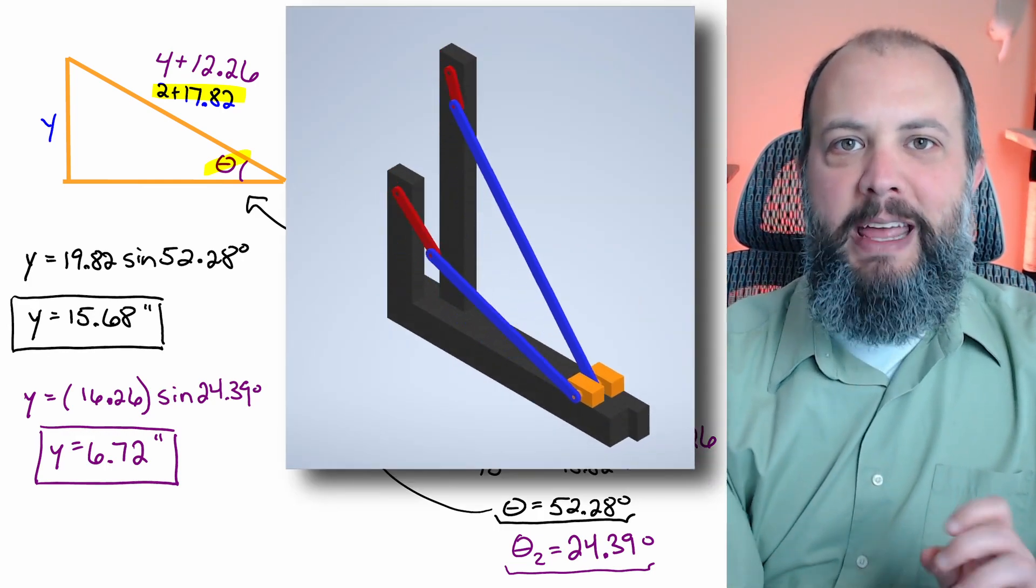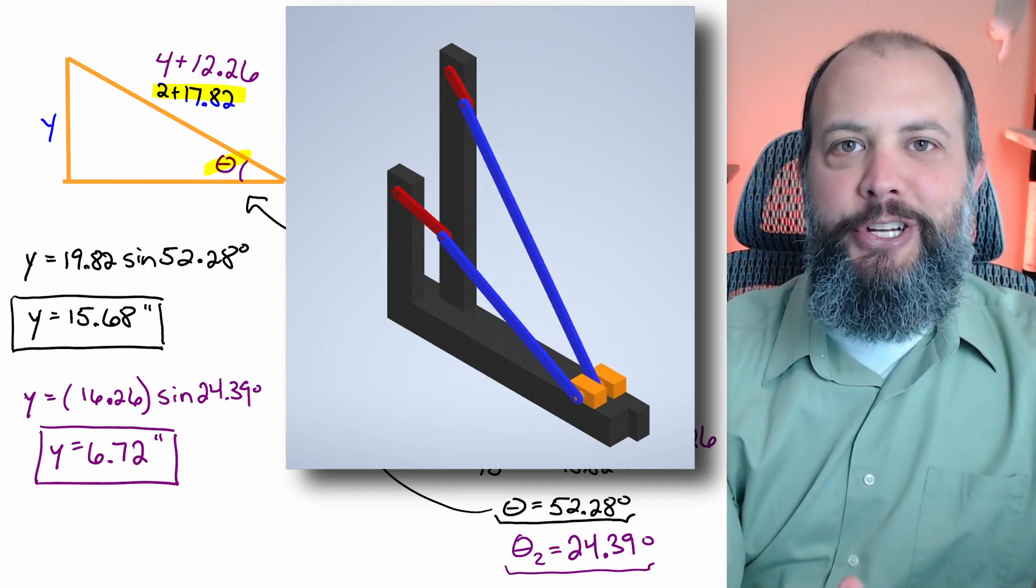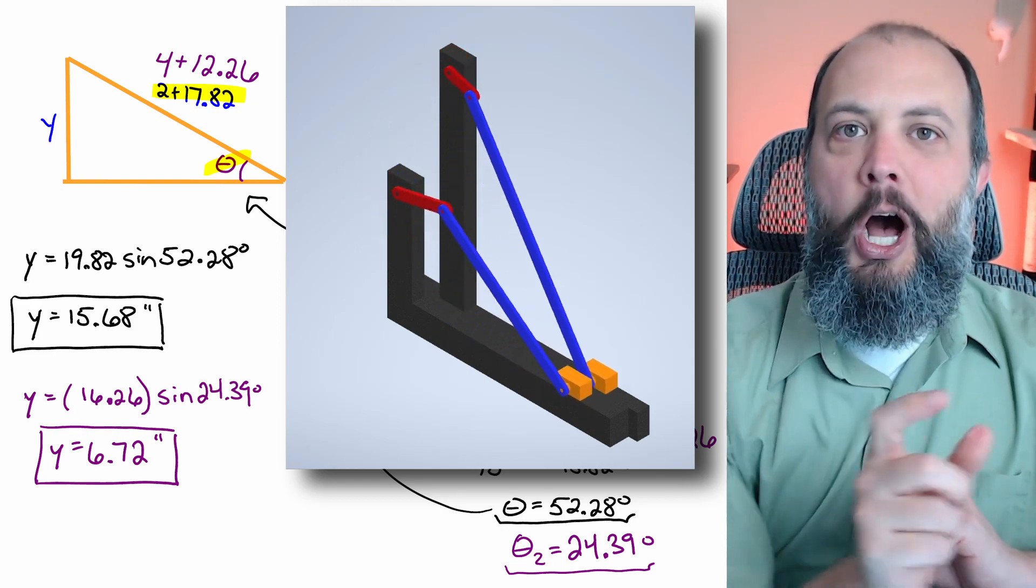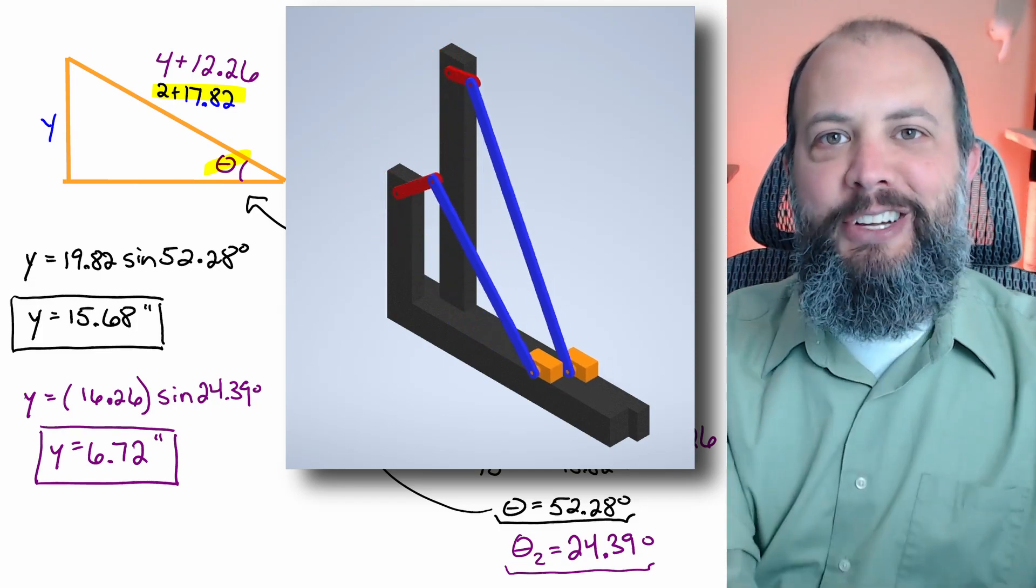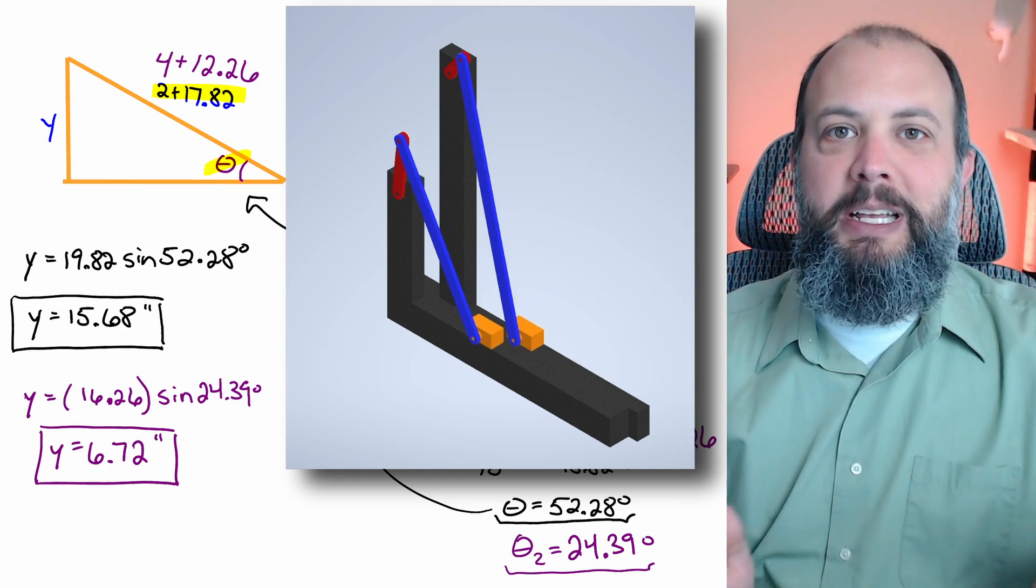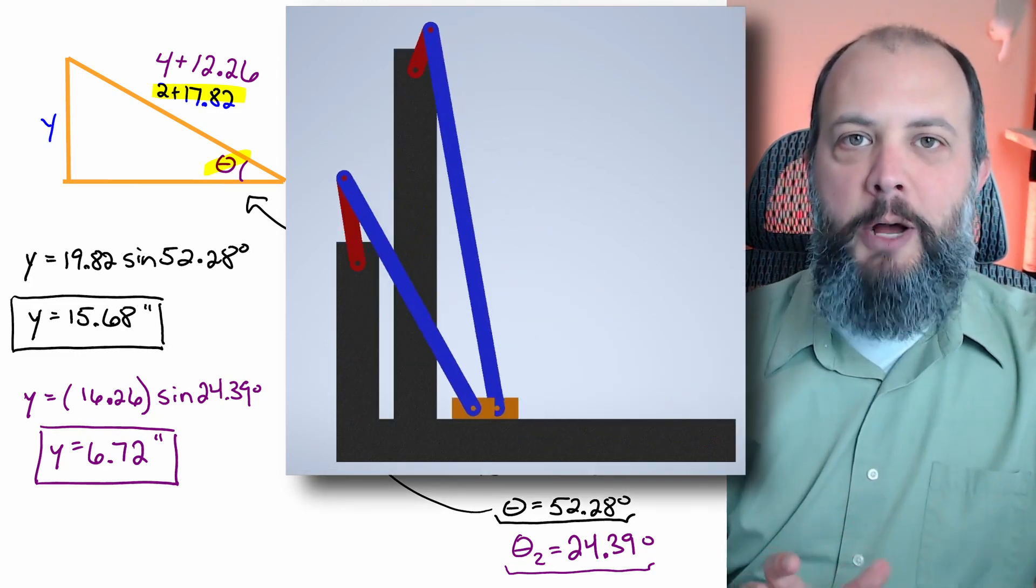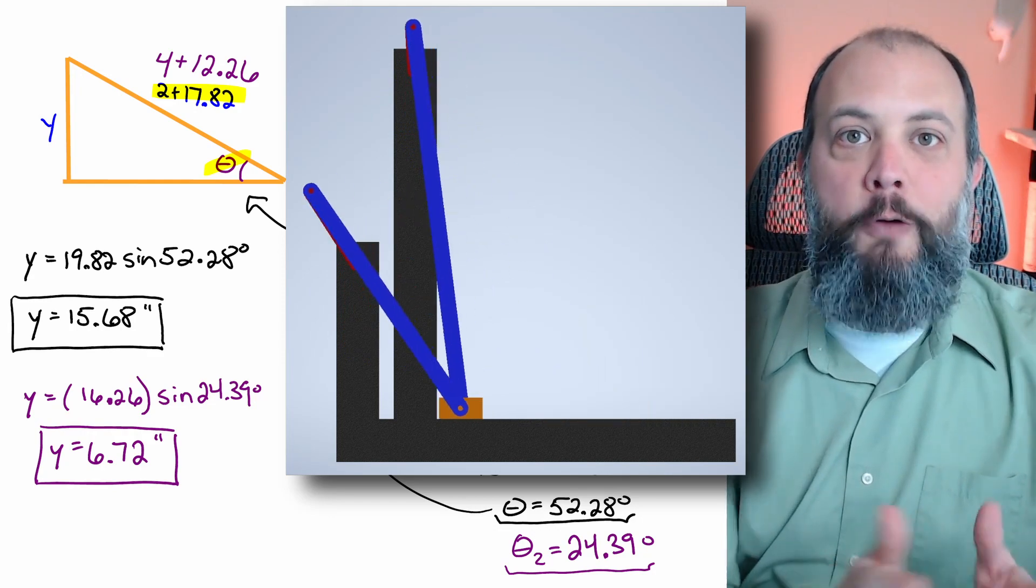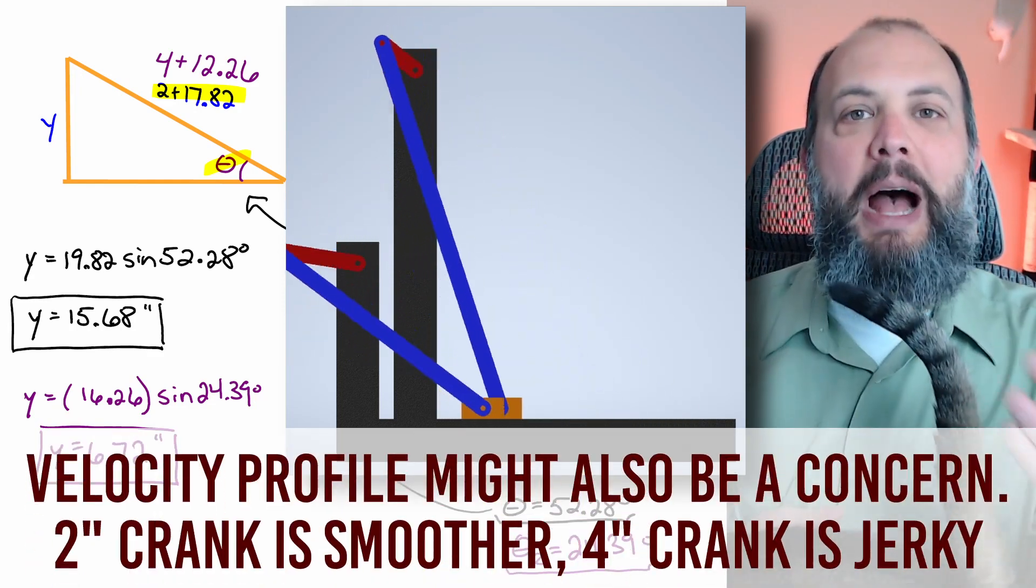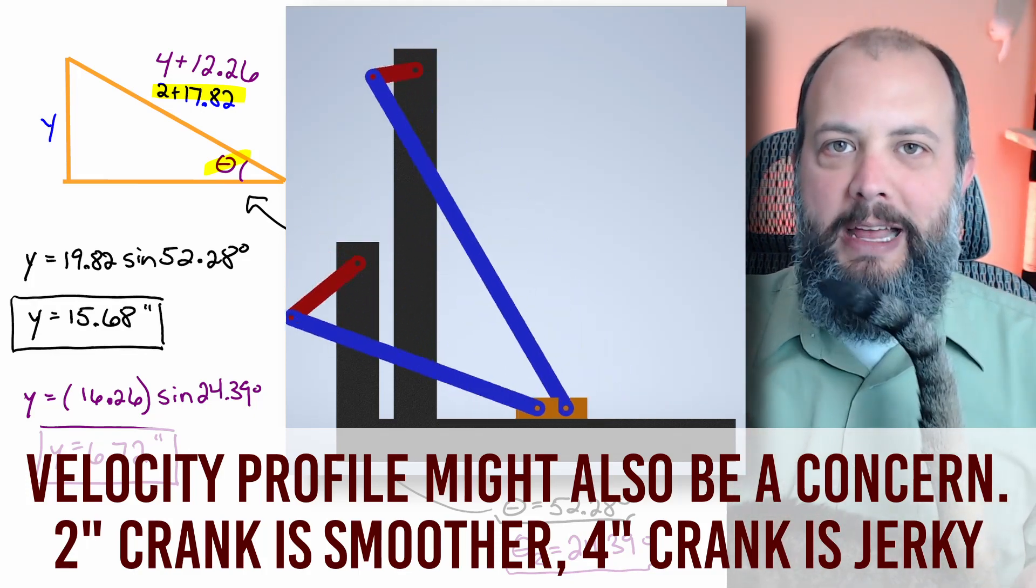And now here you can see what both mechanisms look like side by side. They both have the same stroke length of 10 inches, they both have the same advance return time ratio, but because the crank has a different length in each case the crank hub position has to be in a different location for each. And which one of these two designs is actually better is probably going to depend on the spatial constraints of your mechanism. If you want a much flatter design you could go for a longer crank since you'll have a much smaller offset.